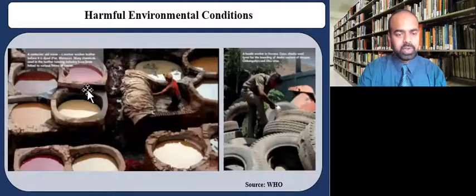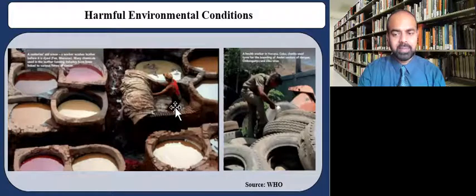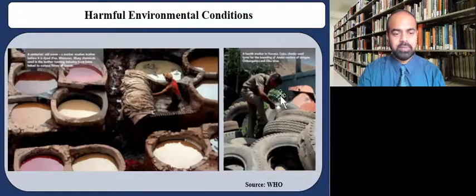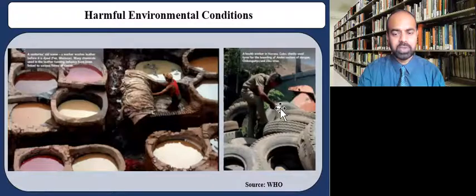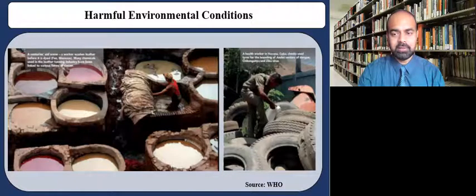The figure to your left is from Morocco, Africa. It shows a worker washing leather before it is dyed. Many chemicals used in the leather tanning industry have been linked to various forms of cancer. The figure to your right is from Havana, Cuba. You can see a worker checking used tires for the breeding of Aedes mosquito, which is a vector for dengue, chikungunya, and Zika virus.